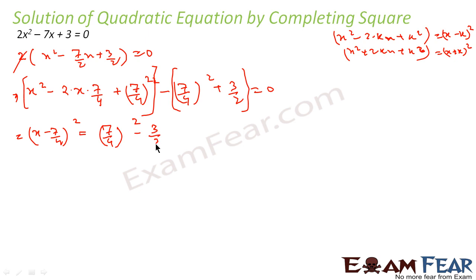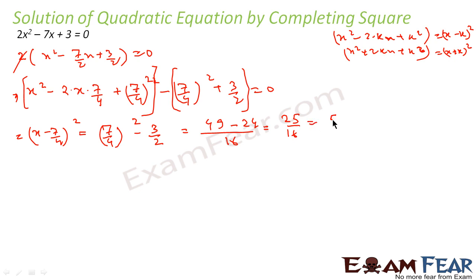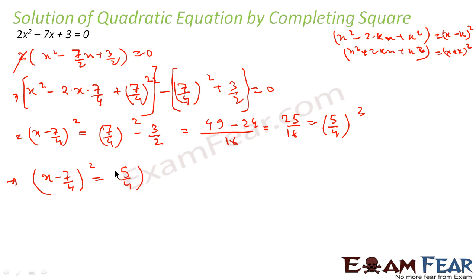That is (7/4)² - 3/2 = 49/16 - 24/16 = 25/16, which is nothing but (5/4)². So the equation becomes (x - 7/4)² = (5/4)².